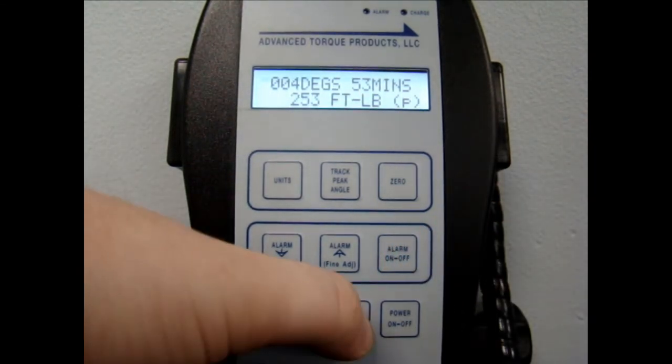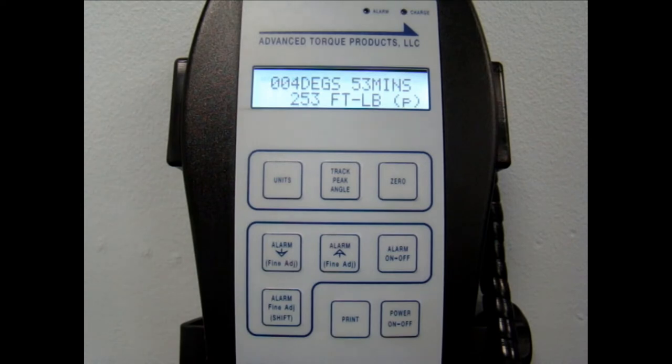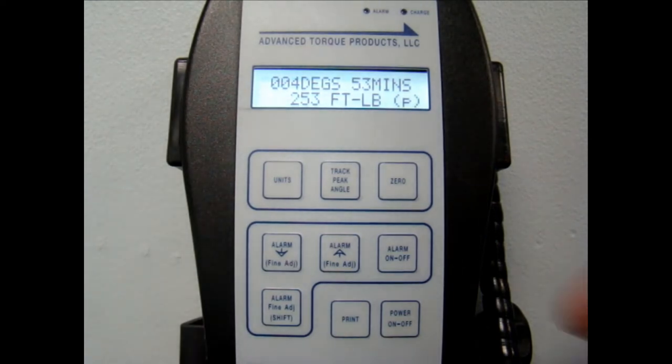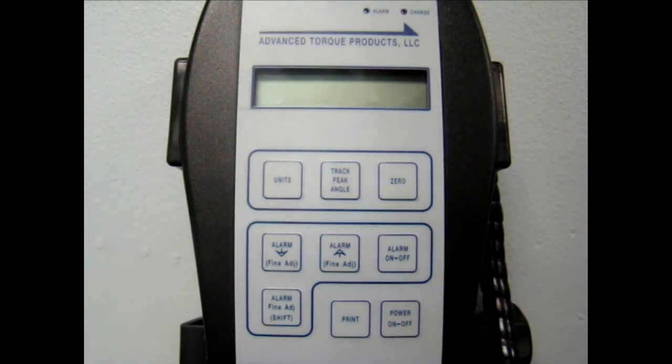Next we have the print button, which can send information from the display to a computer. And finally, the power button, which turns the display on and off.